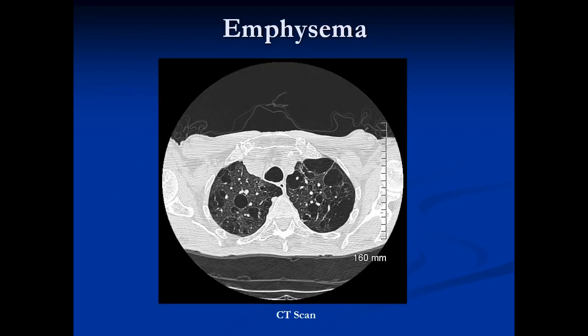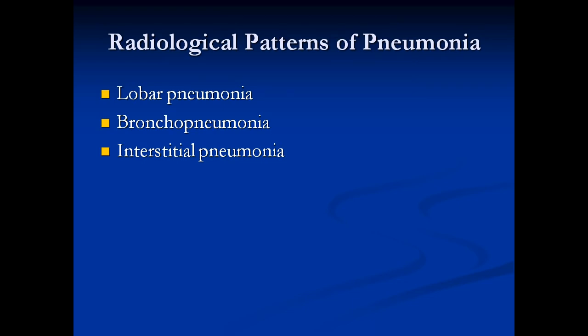Here's a CT scan example of the same thing, which shows you these holes in the lung. Some of these are bullae and others are areas of emphysema.